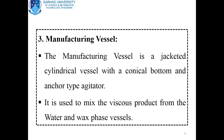The manufacturing vessel is a jacketed cylindrical vessel with a conical bottom and an anchor type agitator. The purpose of this manufacturing vessel is to mix the viscous product from the water and wax phase vessels. The water phase vessel ingredients and the wax phase vessel ingredients are both incorporated into the manufacturing vessel, and the purpose of the manufacturing vessel is to mix the viscous product that was already processed in the water and wax phase vessels.